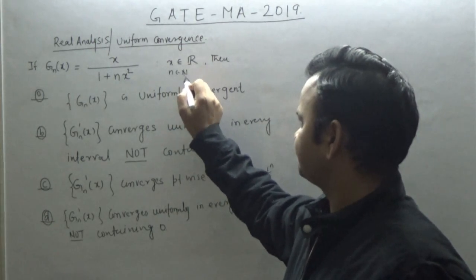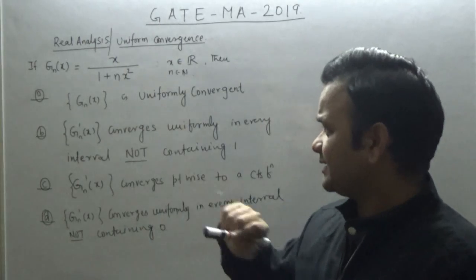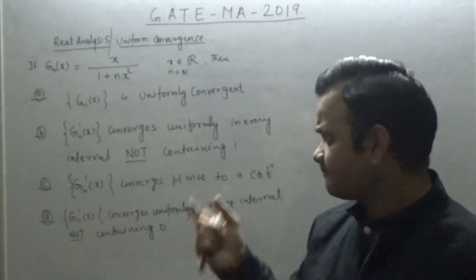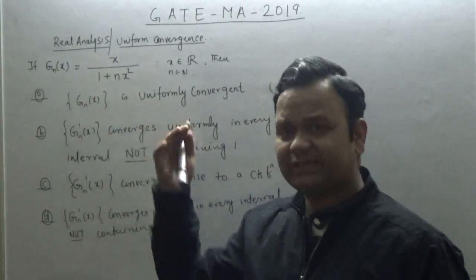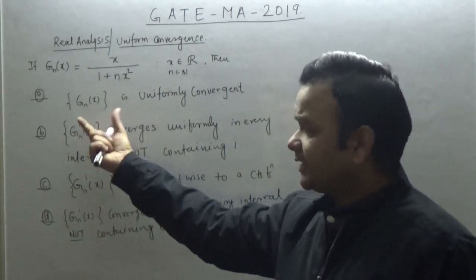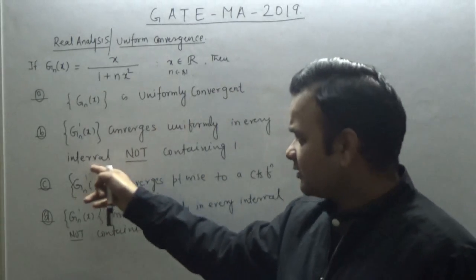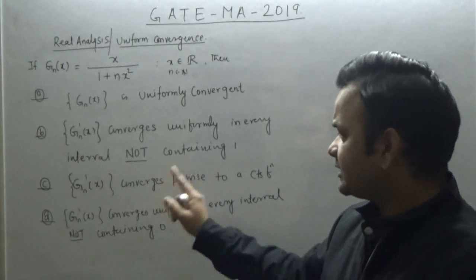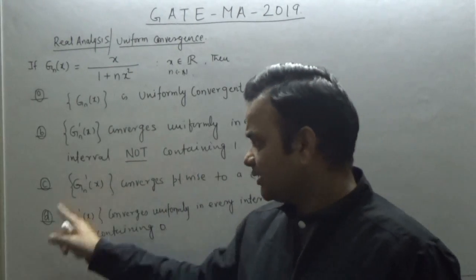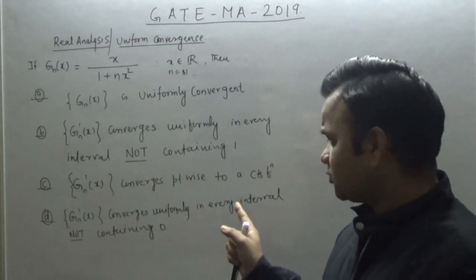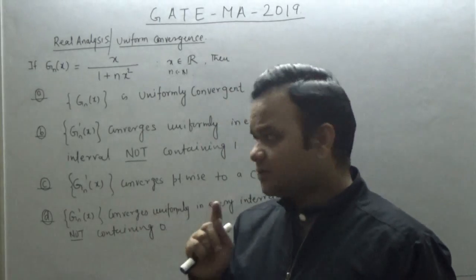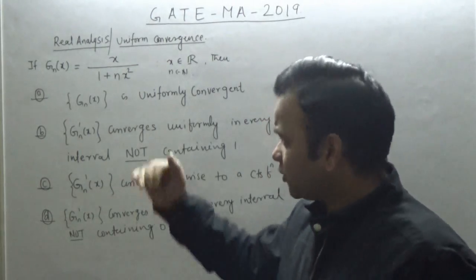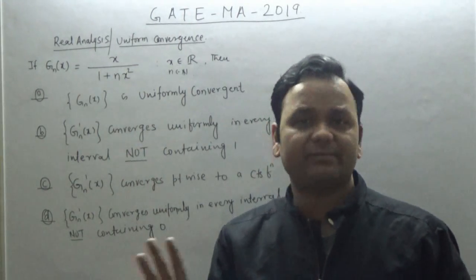Given this sequence, what can you say about it — does it converge uniformly? Second, what can you say about the derivative g_n' — does it converge uniformly in every interval not containing 1? Third option: does g_n' converge pointwise to a continuous function? Last: does g_n' converge uniformly in every interval not containing zero?